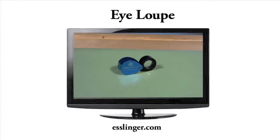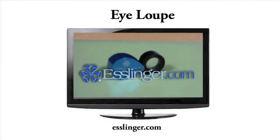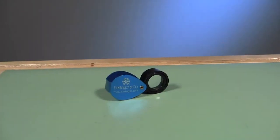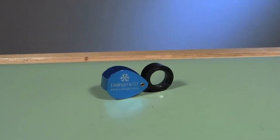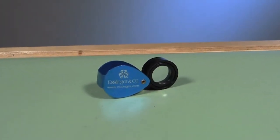Esslinger.com has the tools that watchmakers and jewelers need, like eye loops. The eye loop, also known as a magnifier, is probably the most used tool at any workbench.